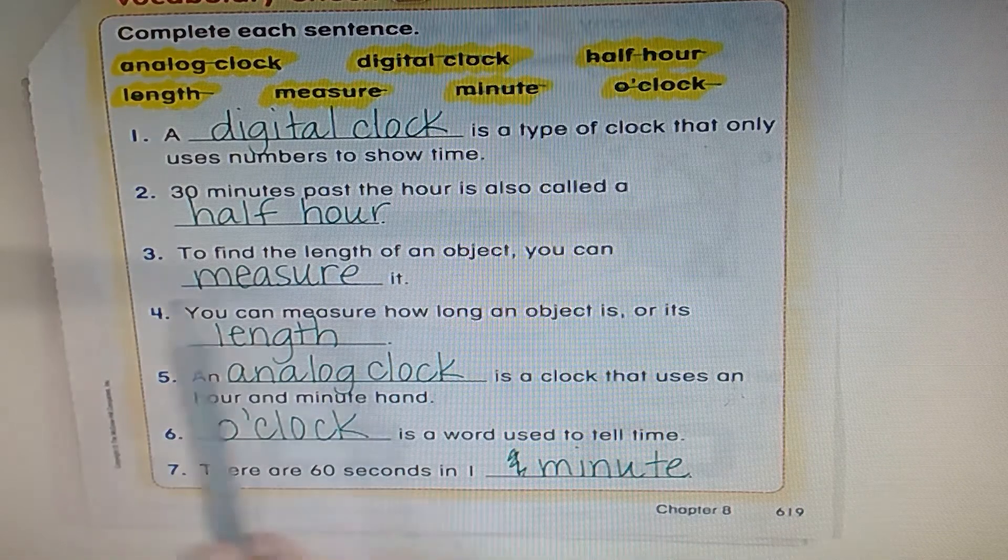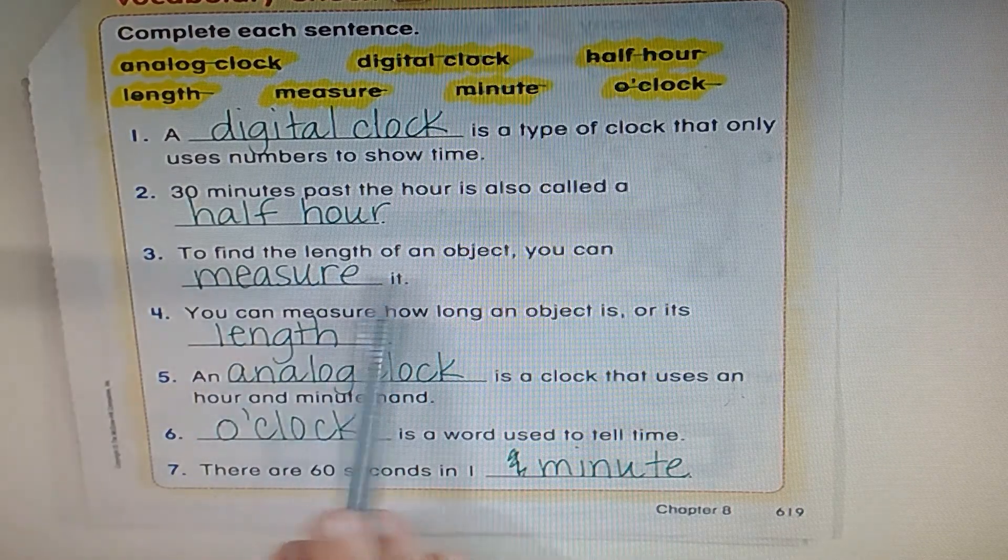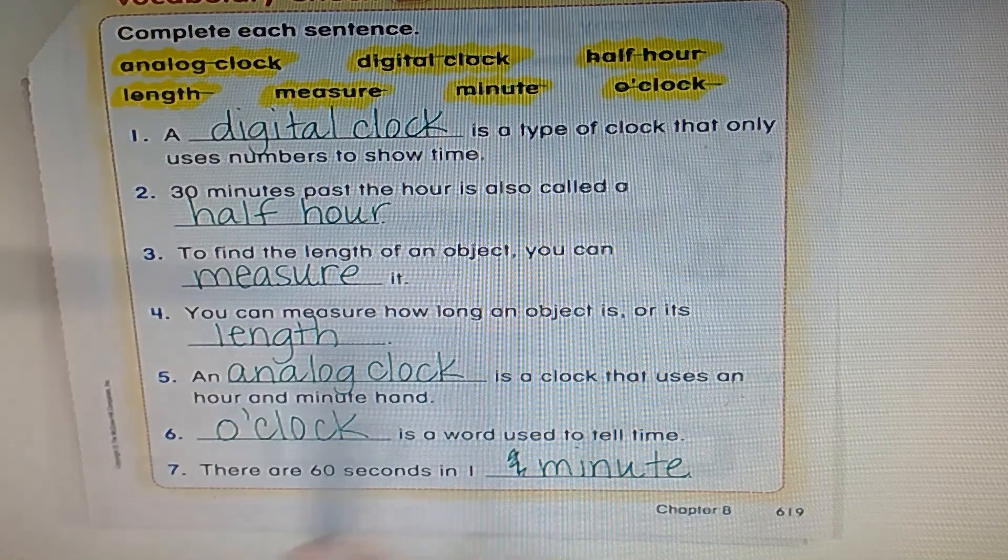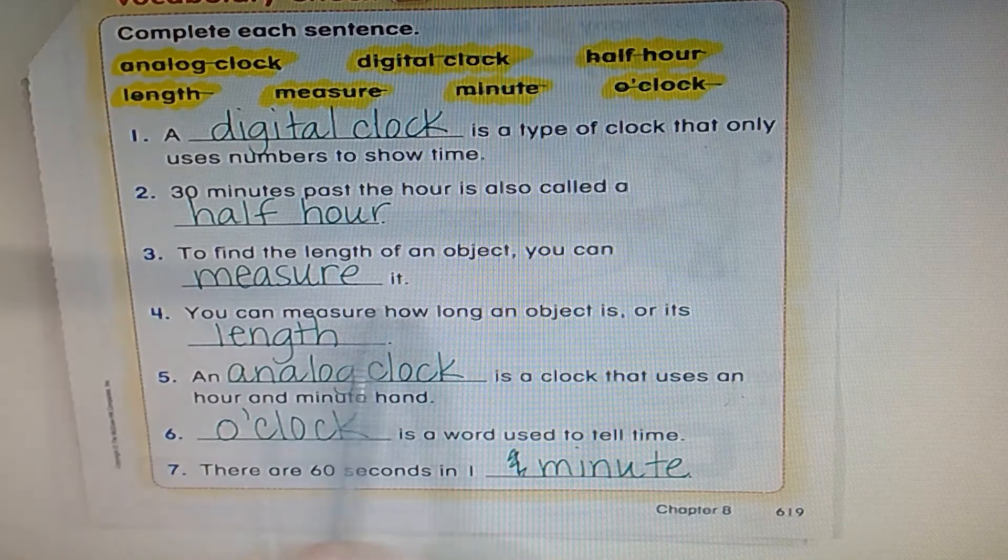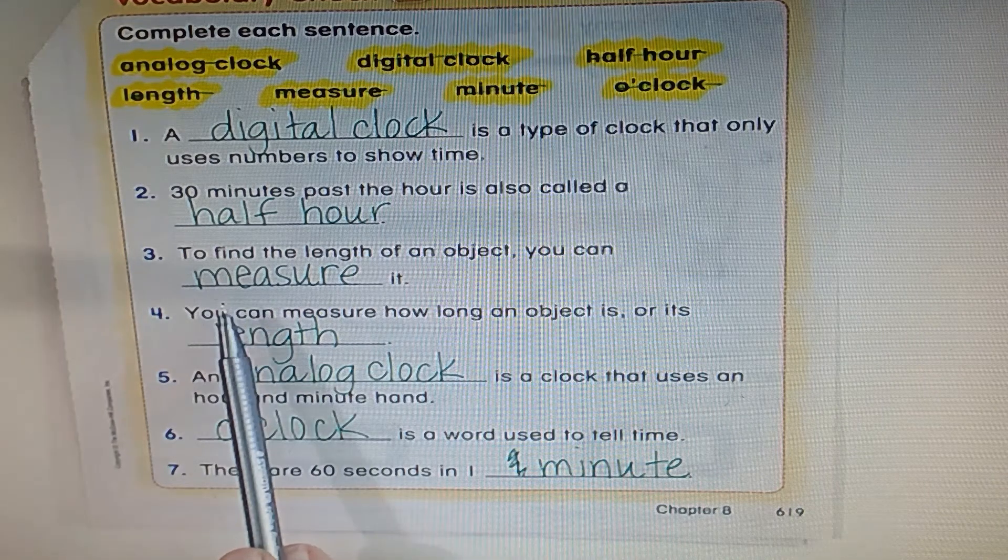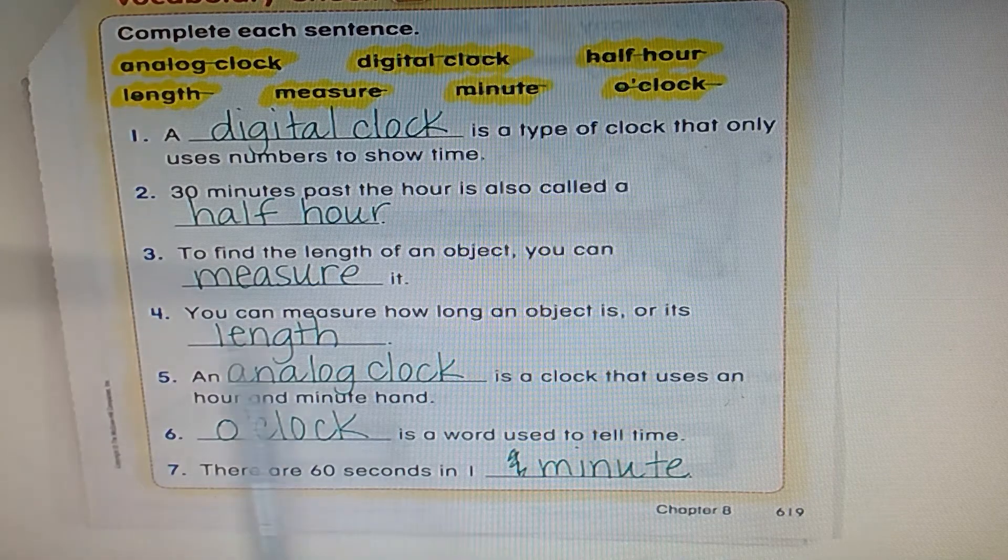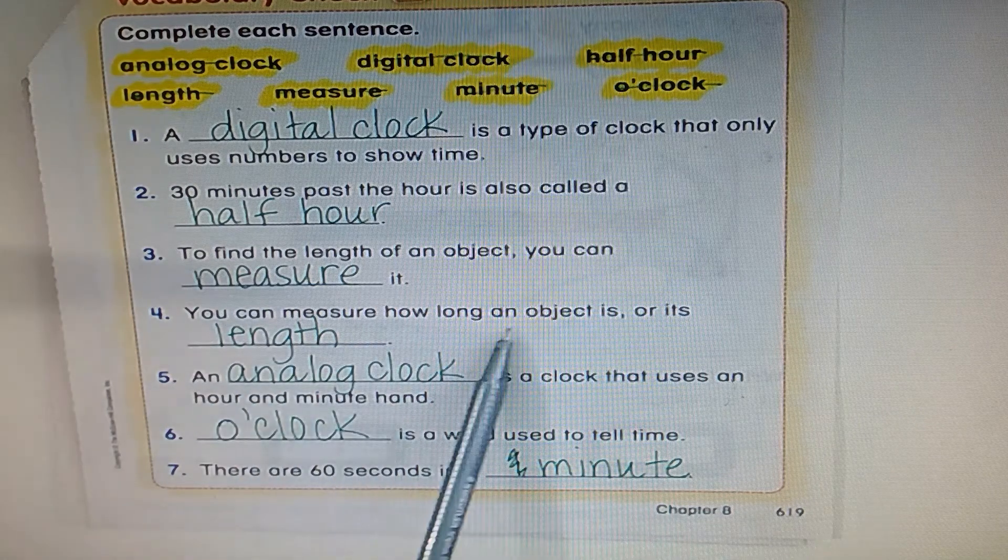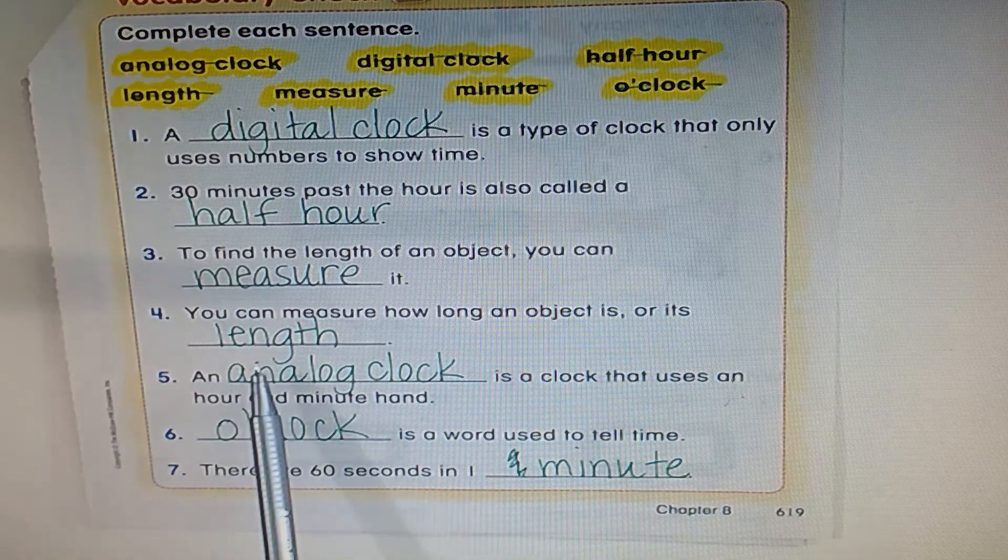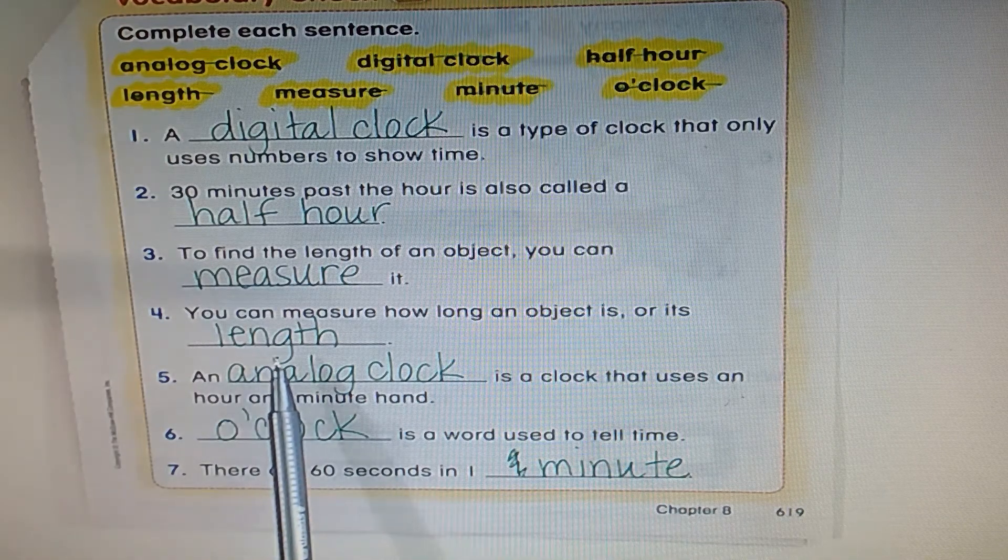30 minutes past the hour is also called a half hour. Excellent. To find the length of an object, you can measure it. That's what we did at the beginning of this chapter with paper clips. You can measure how long an object is or its length. Awesome.